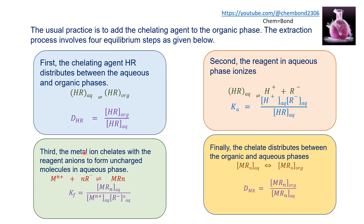In the third step, the metal ion chelates with the reagent anion R⁻ to form an uncharged molecule in the aqueous phase. R⁻ combines with the metal ion to produce a complex in the aqueous phase. The formation constant KF equals the concentration of the unionized chelate in the aqueous phase divided by the metal ion concentration multiplied by the reagent anion R⁻ raised to the power N in the aqueous phase.